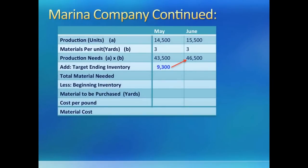Another way to solve this is to use the statement format we just learned. If you look at the May column, you will see how we got 9,300 yards using that format. The arrow connecting 9,300 to 46,500 shows the connection between the two — one is just 20% of the other in this problem.